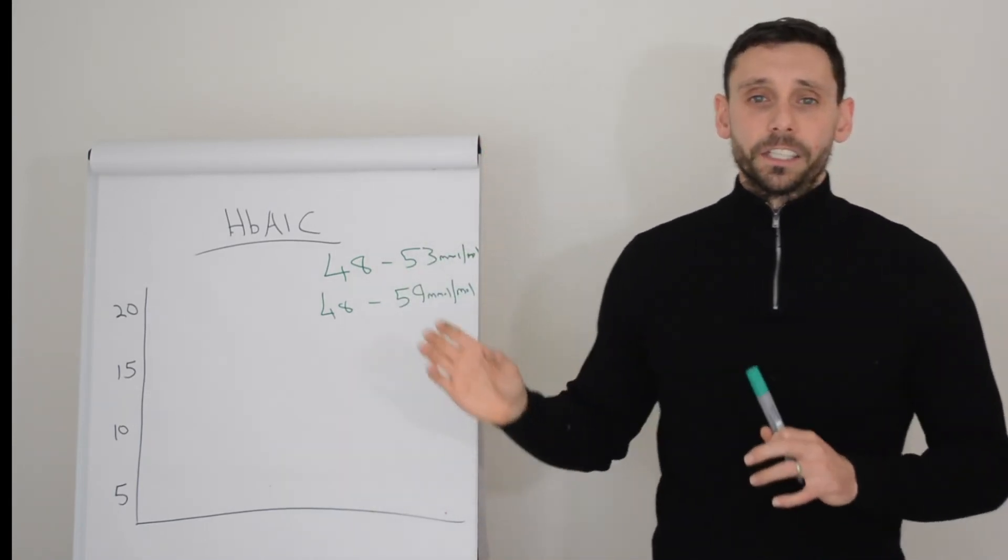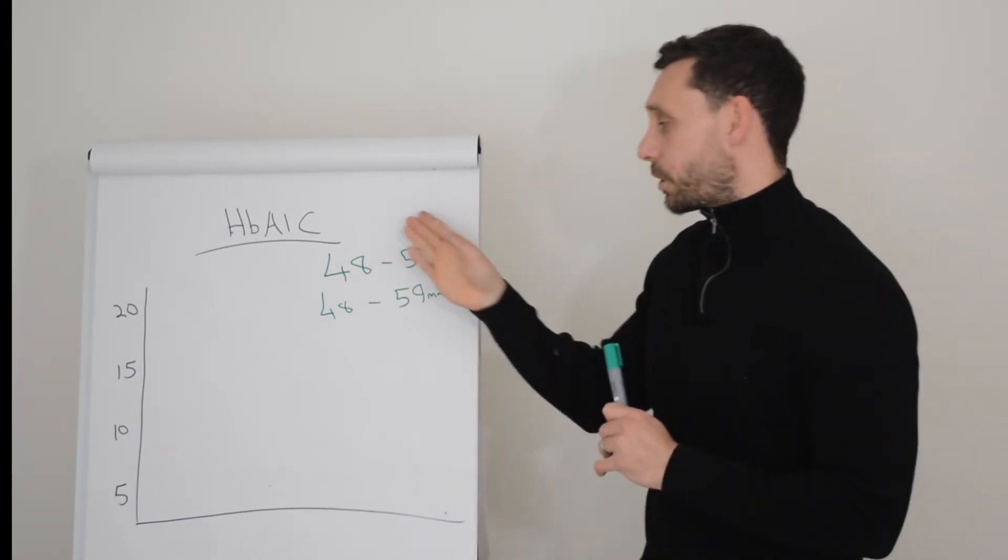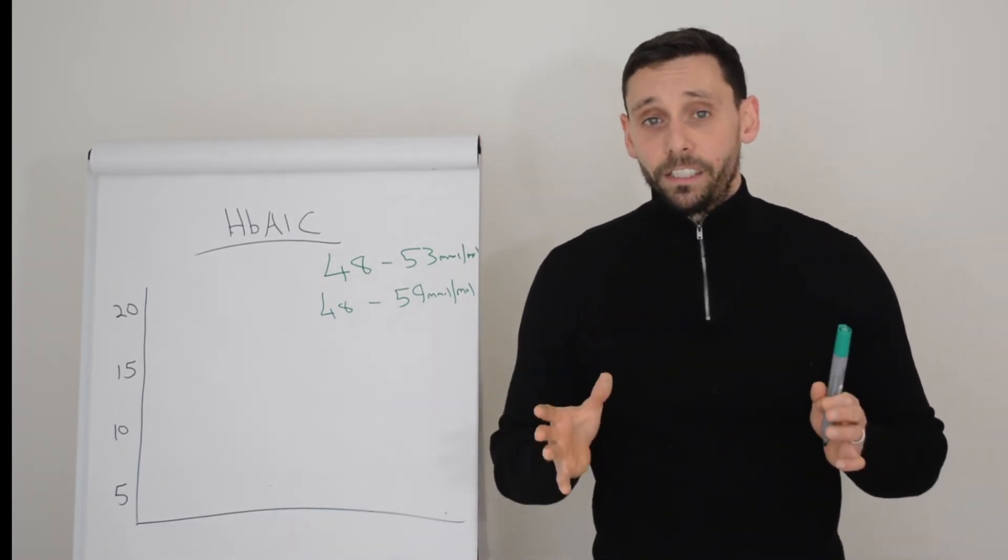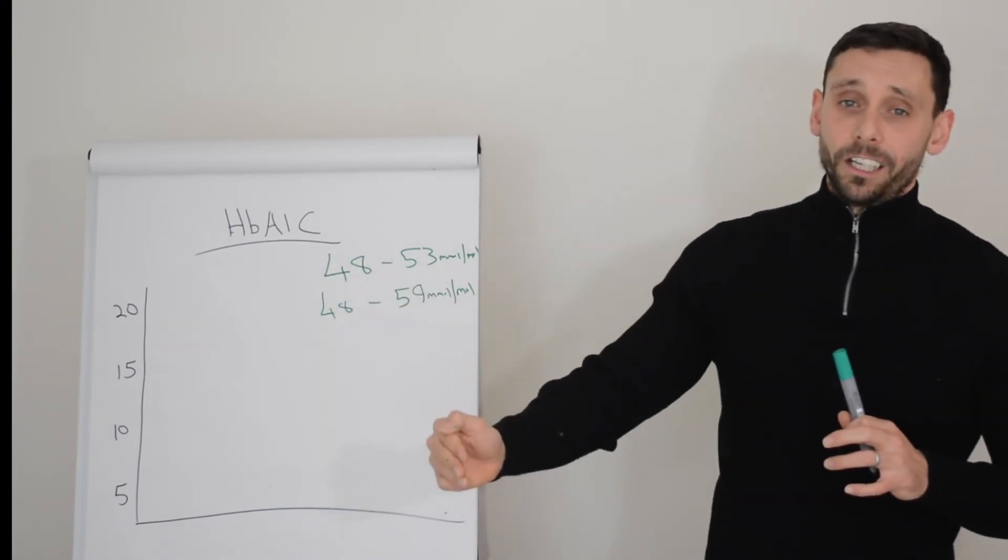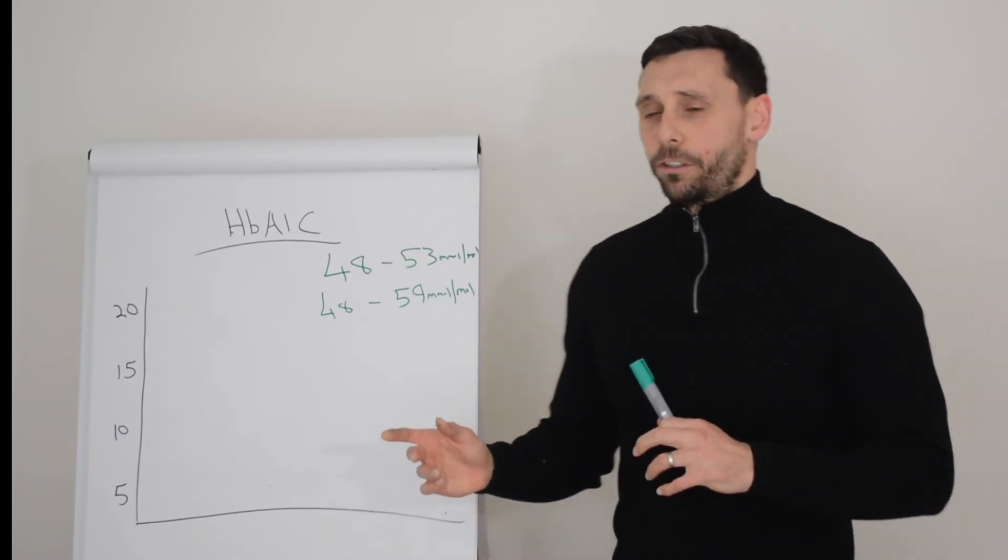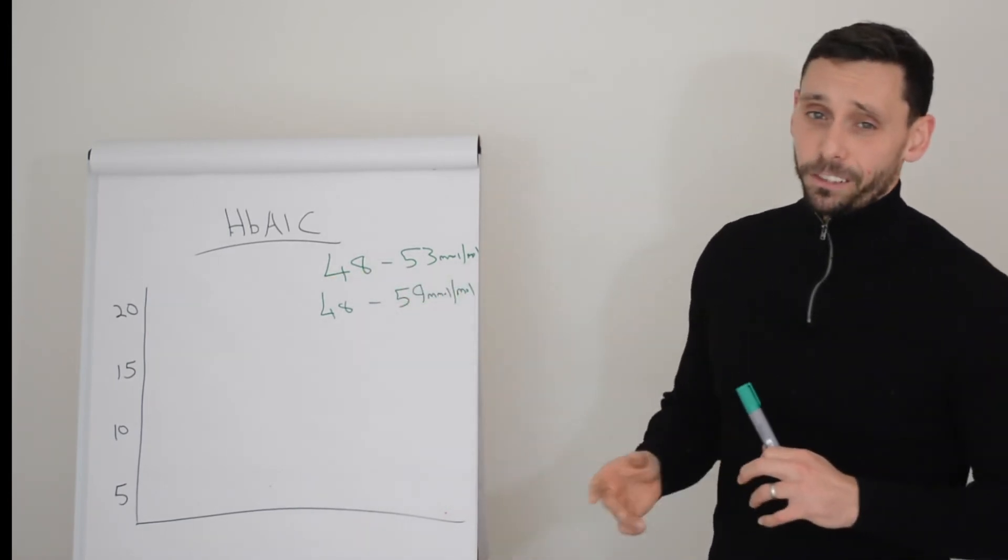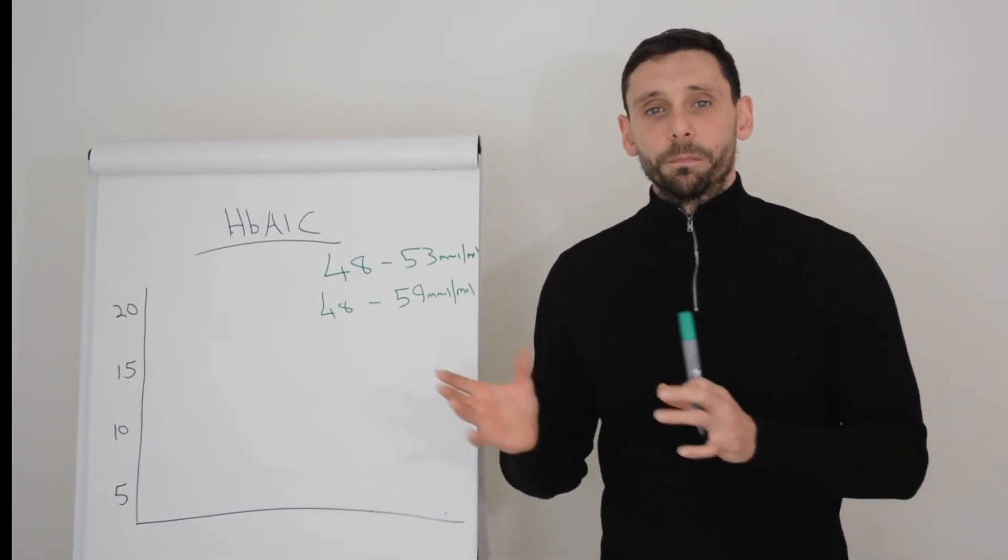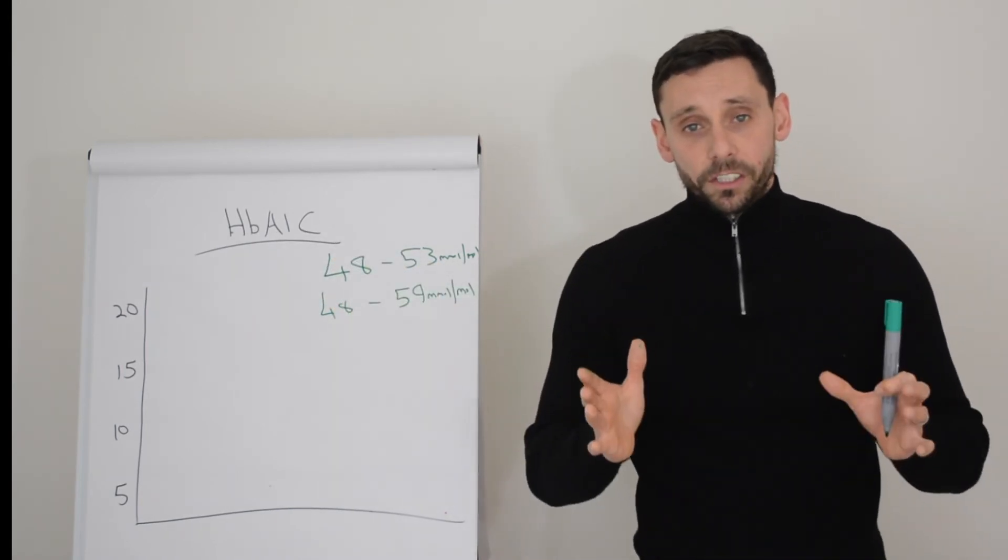Now I'm sure there's a few of you out there who managed to achieve HbA1cs below 48 without hypos, and I take my hat off to you because that's no easy feat. But as a general rule, if you're trying to drive it too low, it does come with additional hypos. I'd also argue what additional benefit that's giving you, because a HbA1c of 48 to 53, even up to 58 or 59, doesn't really put you at a great increased risk of complications compared to having a HbA1c below this. So we know our target ranges.